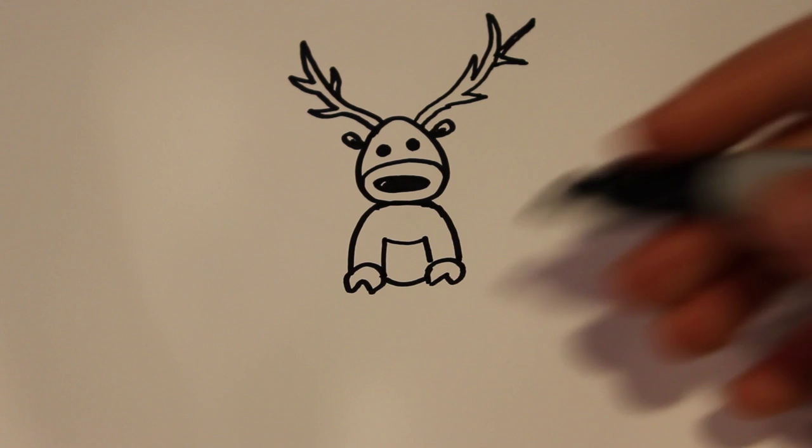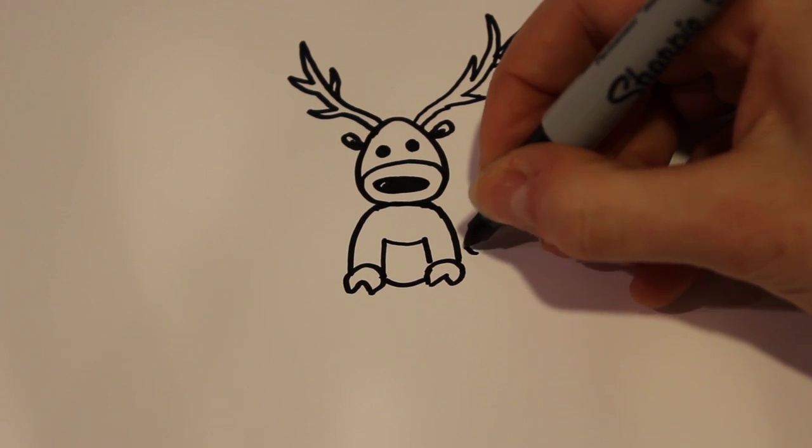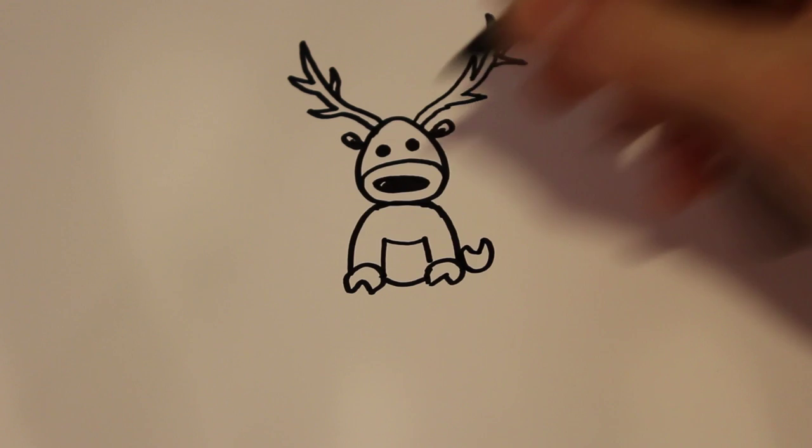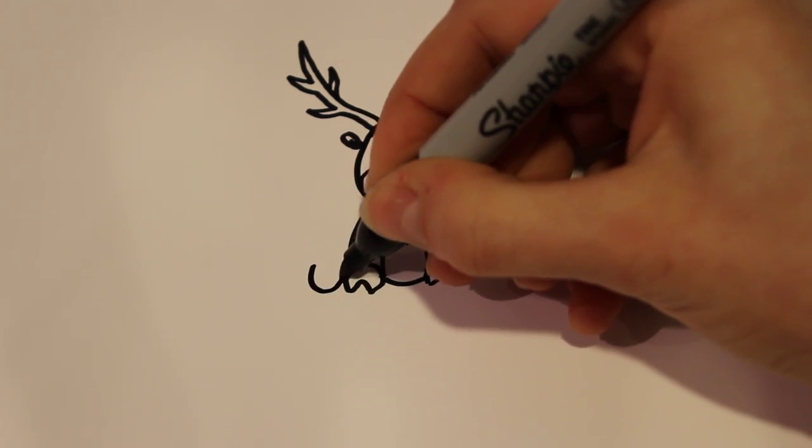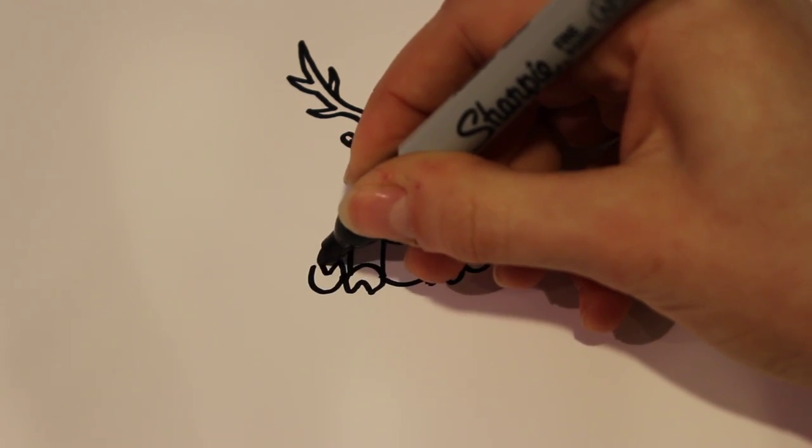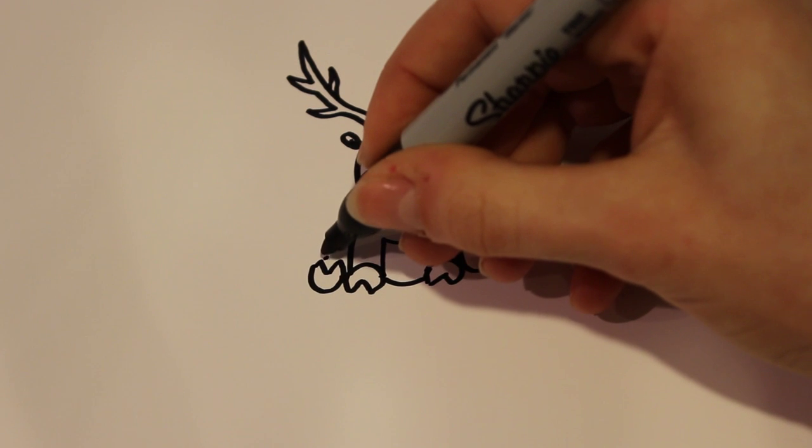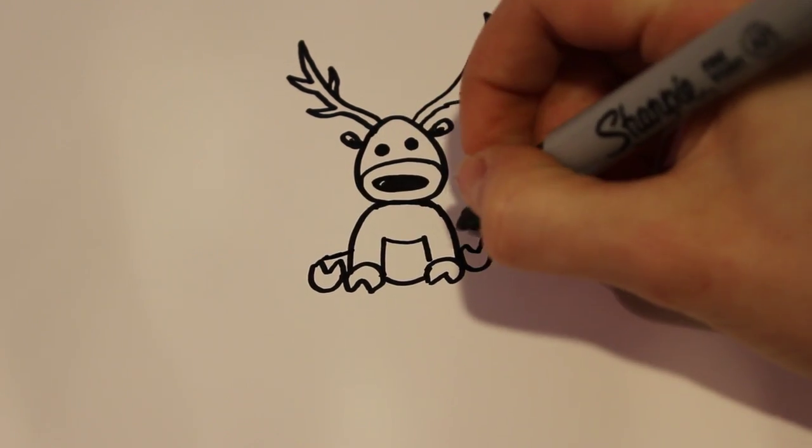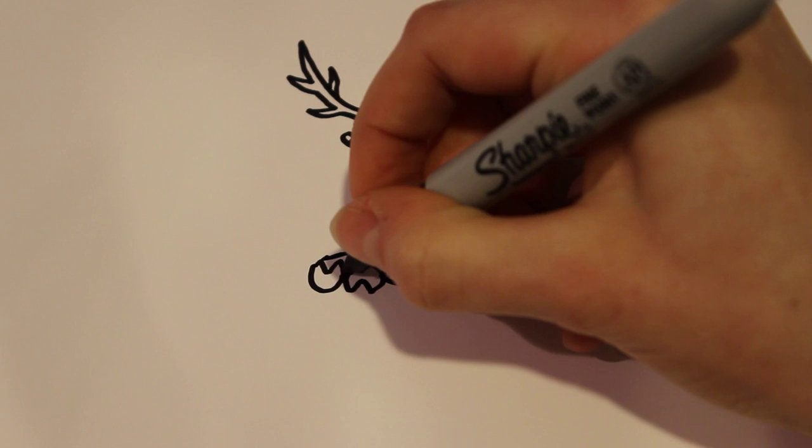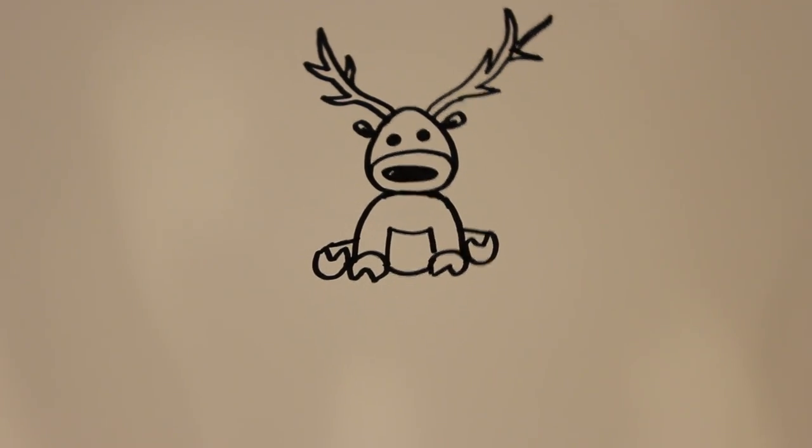For the legs, first draw the outside feet, which are just going to be more fortune cookie shapes on the outside, but these are facing upwards. Then that leg can just connect right back into the body, so he's sitting like he has two of his legs out.